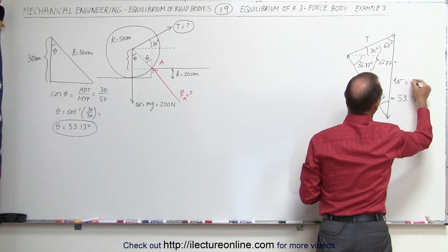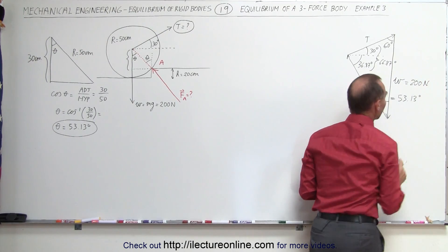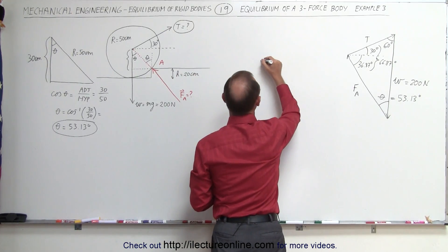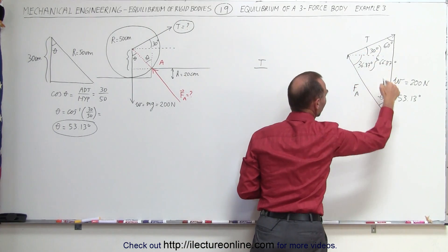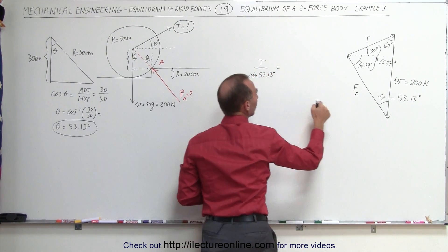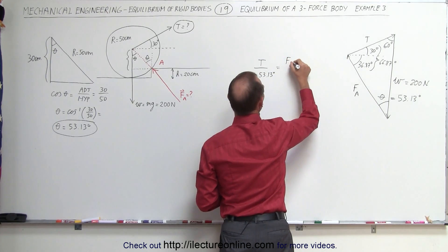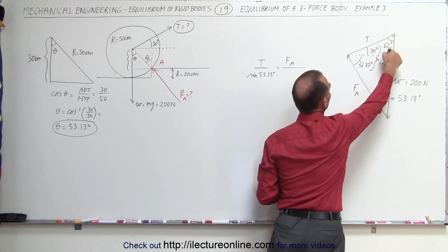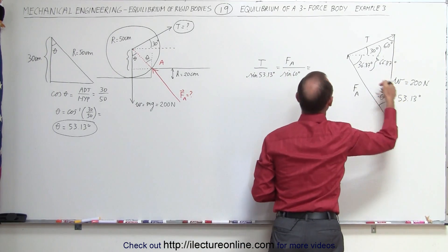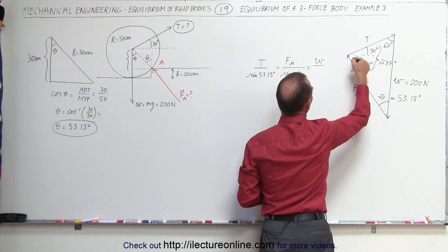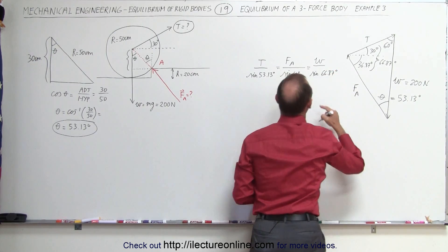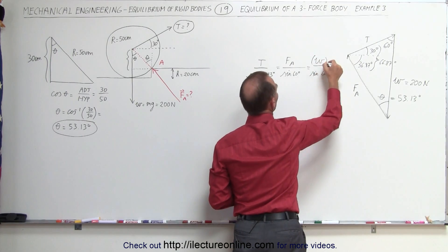We know the weight is 200 Newtons, so we have one of the sides. That allows us to find the magnitudes of the other two sides using the law of sines: T divided by sine(53.13°) equals F_A divided by sine(60°), equals the weight divided by sine(66.87°), which equals 200 Newtons.